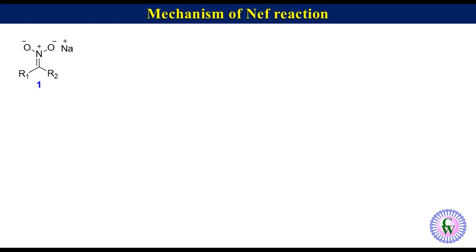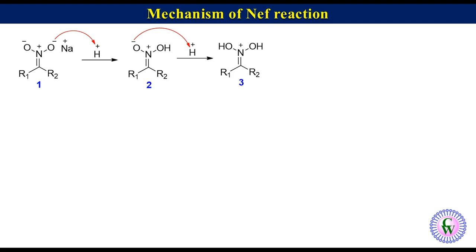Mechanism of NEF reaction: Nitronate salt under strong acidic conditions undergoes kinetic protonation at the oxygen atom to produce nitronic acid 2, which again undergoes protonation on the second oxygen atom to produce iminium ion 3. This iminium ion has a strong electrophilic carbon atom due to the positive charge on the nitrogen atom.